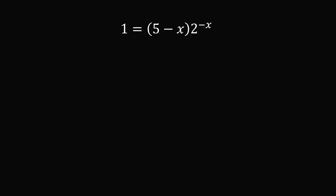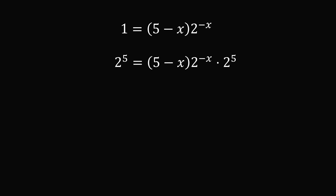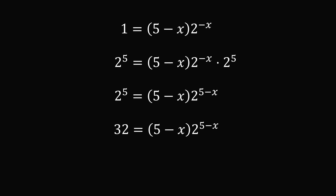We notice we have a product with an exponentiation. However, the exponent is negative x while the product involves 5 minus x, so we want these terms to match. We want the exponent to be 5 minus x. To do that, we multiply both sides by 2 to the power of 5. Then 2 to the power of negative x multiplied by 2 to the power of 5 simplifies to 2 to the power of 5 minus x. Since 2 to the power of 5 equals 32, we're getting closer to the form x times e to the power of x equals a constant — except we have base 2, not base e.